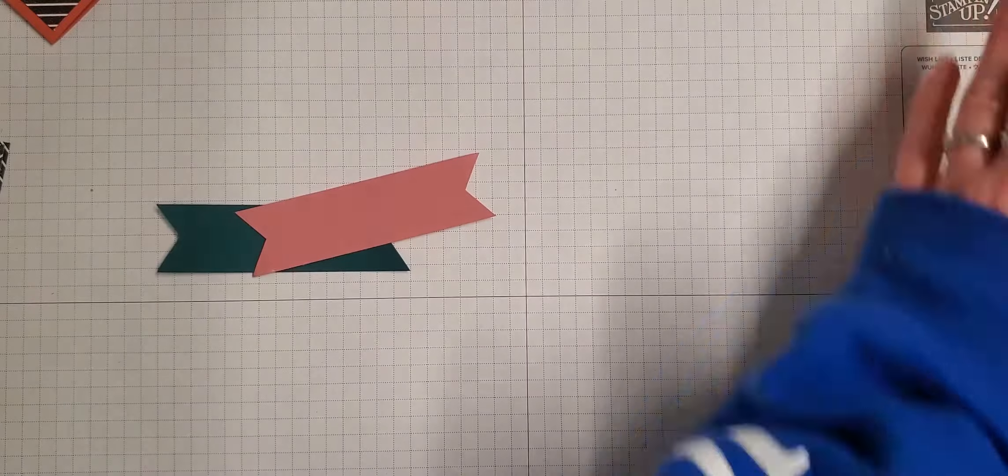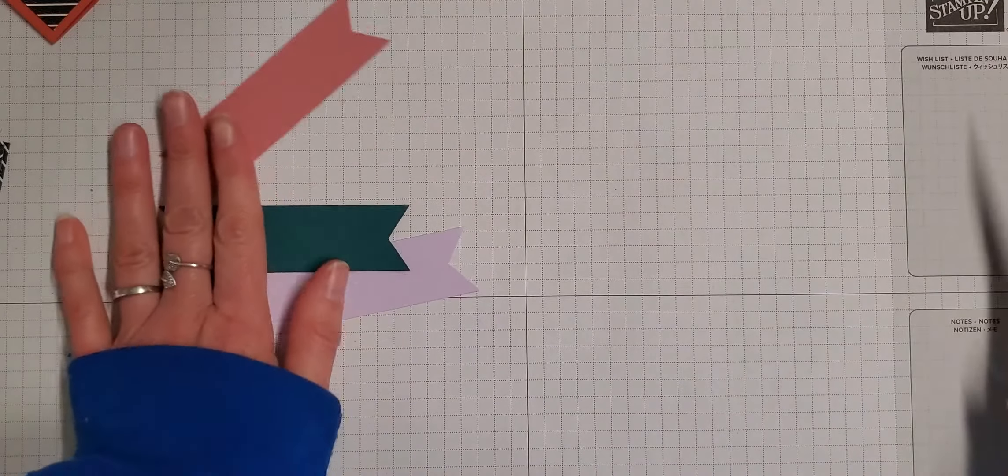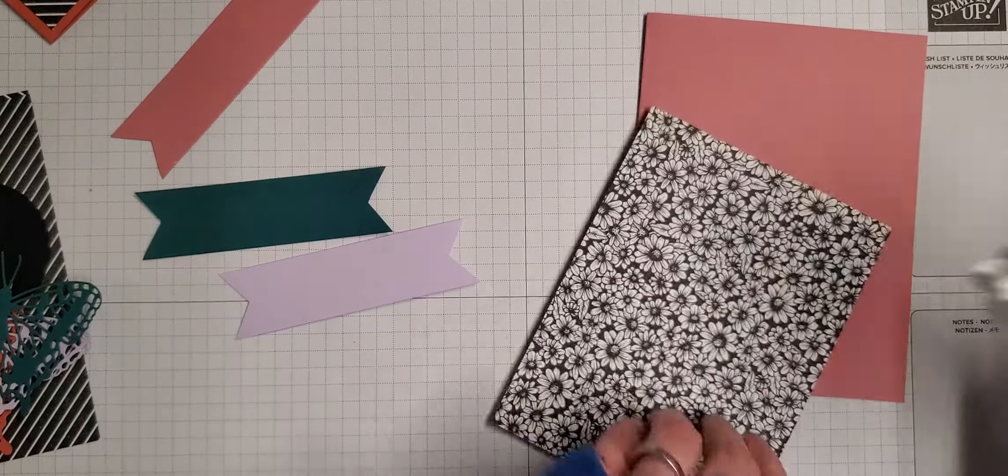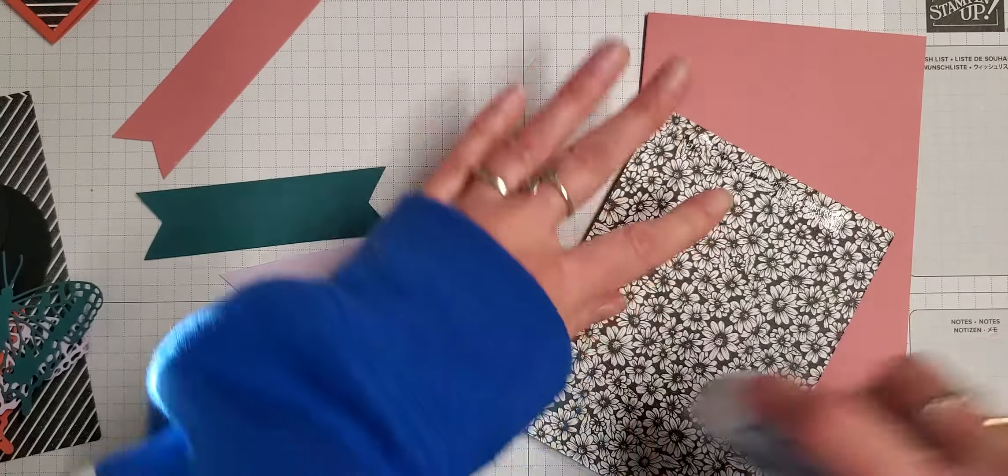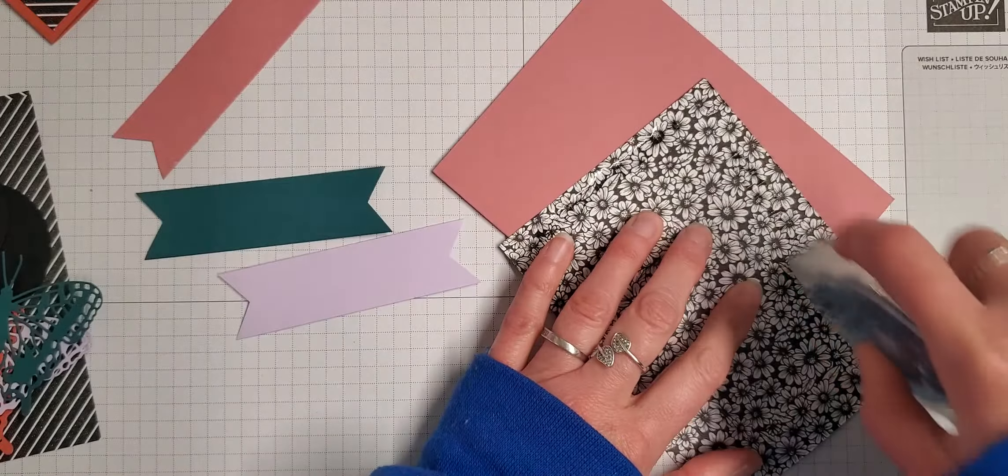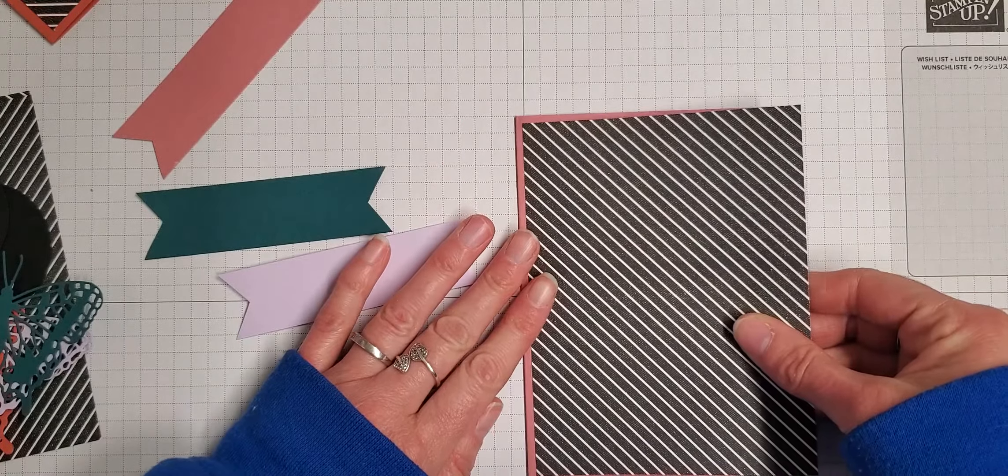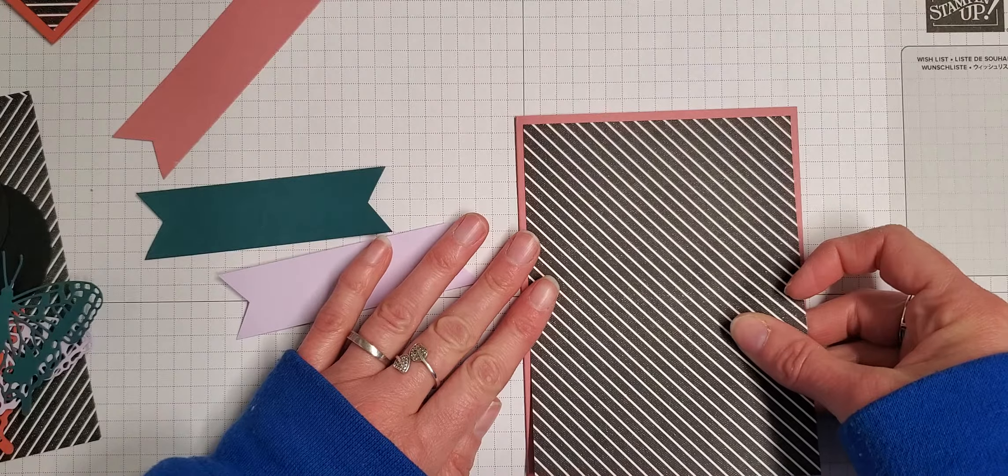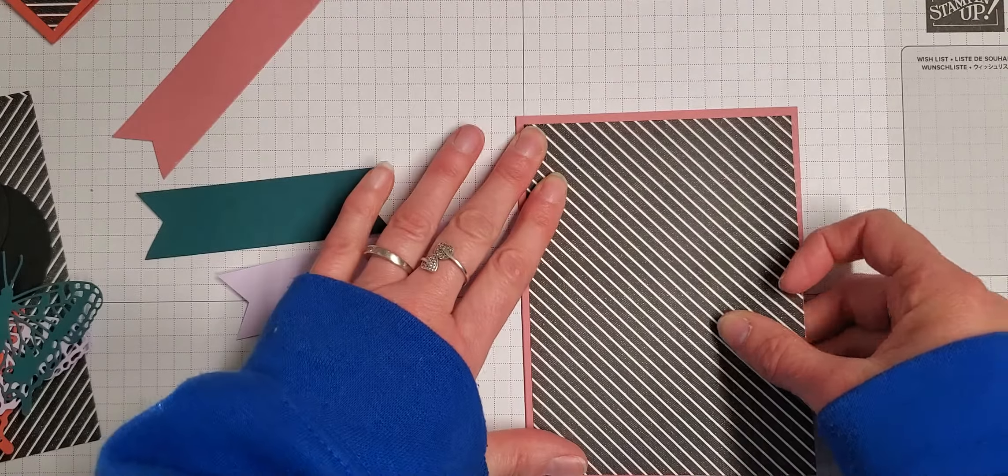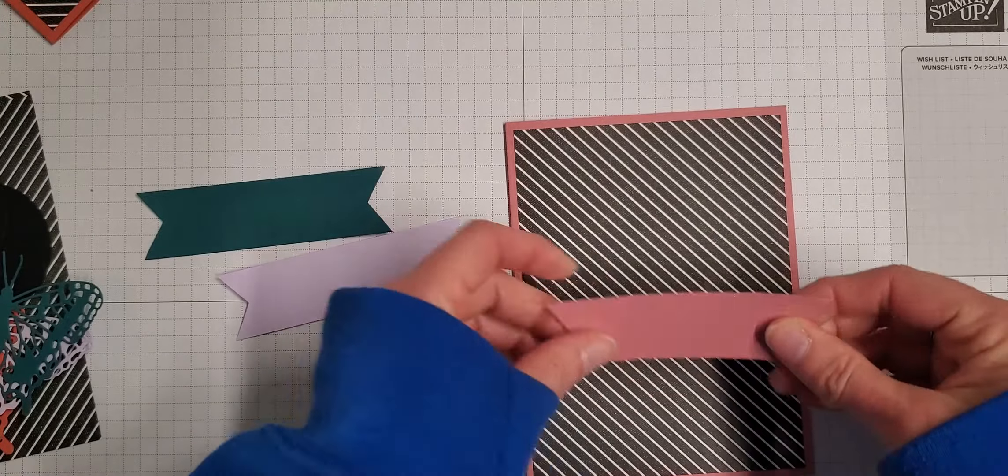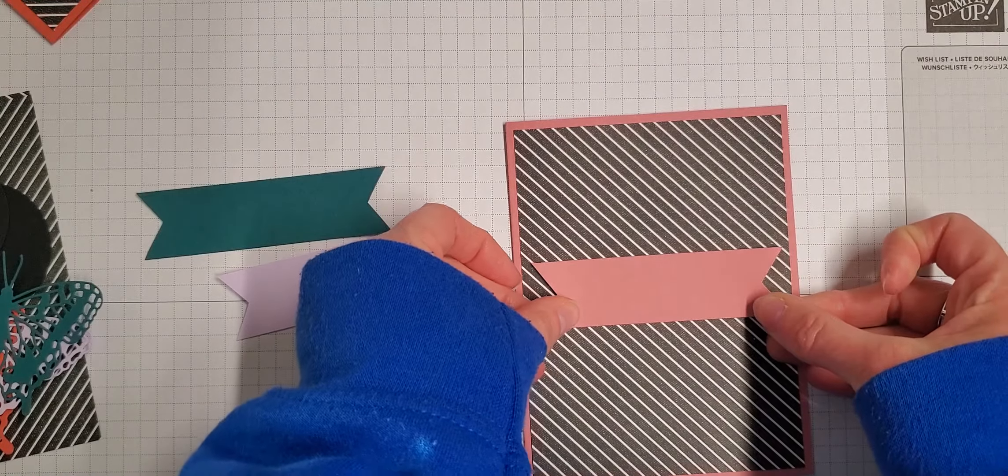They couldn't get a good color match on it, so they tried multiple times and then they just kind of gave up figuring, well we have the Stampin' Write markers and the blends so that will have to suffice. Okay, so there's the four, or five colors rather. We're going to make a really cute set of note cards and I'm making them all exactly the same.